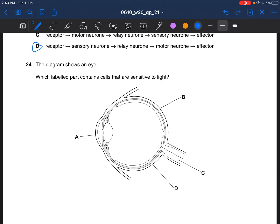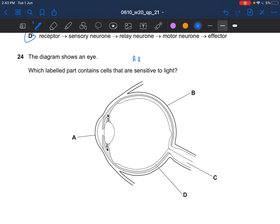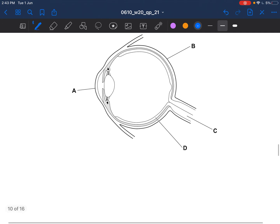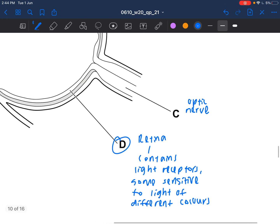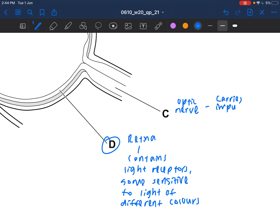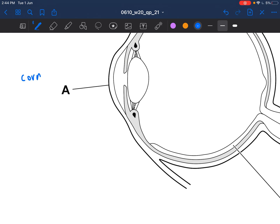Next question. The diagram shows an eye. Which labeled part contains cells that are sensitive to light? This is talking about retina. Contains cells that are sensitive to light. D would be retina. So retina actually contains light receptors, in which some are sensitive to light, to different colors. C is your optic nerve. It carries impulse to brain. Then A is your cornea. What cornea does is that it refracts light. So the answer would be D.